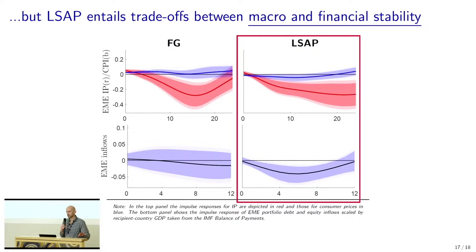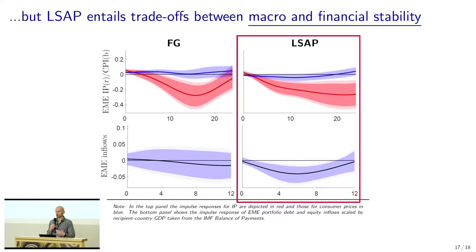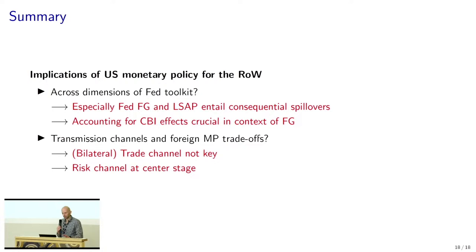For LSAPs, we do not find this trade-off — somewhat surprising because the dollar exchange rate appreciates by essentially just as much as in the case of forward guidance. We haven't resolved yet why there is no trade-off here; one possible reason is that the contraction in output occurs somewhat faster than in the case of forward guidance. However, while there doesn't seem to be evidence for a trade-off between stabilizing output and prices for LSAPs, there does seem to be evidence for a trade-off between macroeconomic stability on the one hand and financial stability on the other. Portfolio inflows drop in response to a contractionary LSAP shock, so if monetary policy were to loosen more to stabilize output and prices, this would discourage foreign investors and further contract inflows, potentially threatening financial stability.